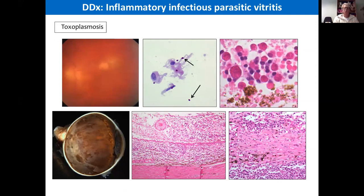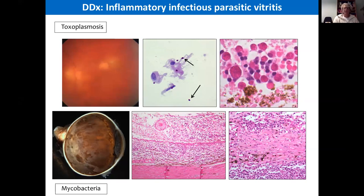Perhaps more commonly in India, one of the major differential diagnoses of a vitrectomy sample to rule out vitreoretinal lymphoma is mycobacteria. I very rarely see such samples, but when speaking to colleagues, including Dr. Arpan and Dr. Gita Vermaganti in Hyderabad, they apparently receive such samples at least once a week.